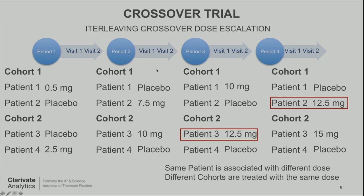Here's a real example — just a simple slice of a crossover study. You have four periods, two cohorts, and the study is dose-escalating, so the dose goes up with each period. The same subject has a different dose in different periods, and different subjects have the same dose in different periods. This clinical trial also had different formulations, different regimens — twice a day or three times a day — and fed and fasted states.